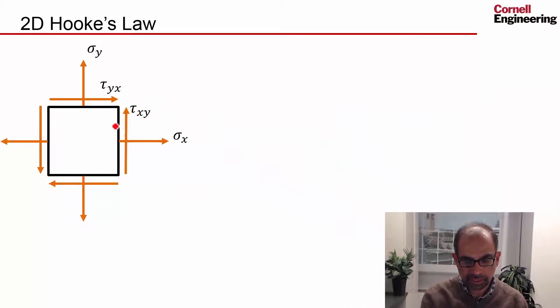Let's put normal strains and shear strains together and look at the 2D version of Hooke's law. We are looking at the 2D case where the normal and shear stresses in the z direction are zero. These are the normal stresses and the shear stresses that are nonzero, and this gives us the relation.